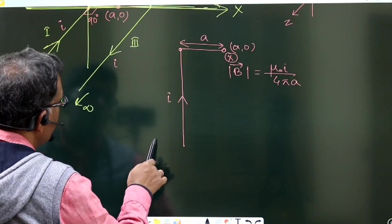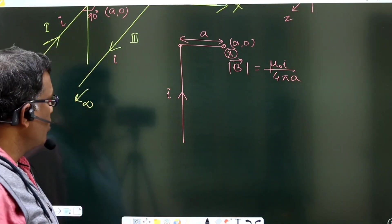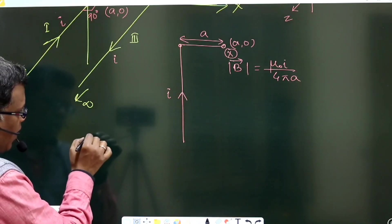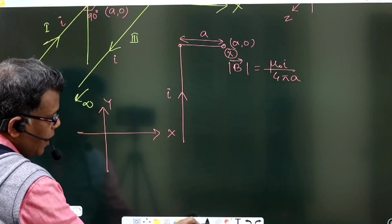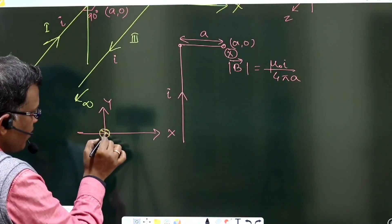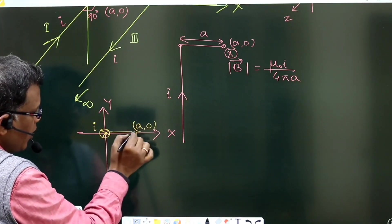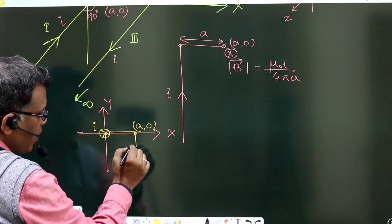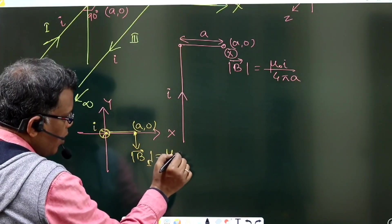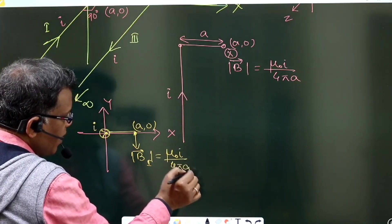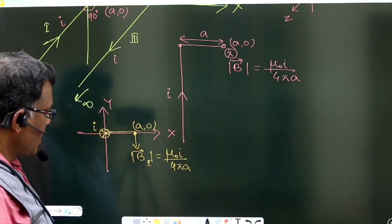Section 1 is along the negative z-axis. If you observe it on the xy plane — x-axis here, y-axis here — the wire position is like current going into the plane. The required point is at (a, 0). By the right-hand thumb rule, the magnetic field due to section 1, B₁, will be μ₀i/4πa in the downward direction, that is, the negative y-axis.